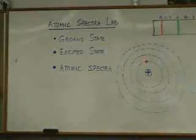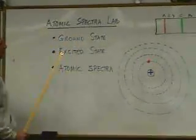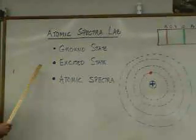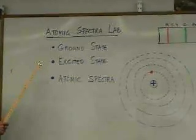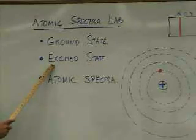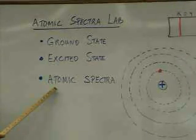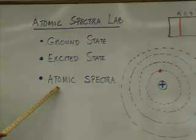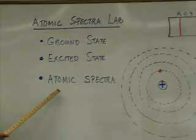Okay, one of the labs you're going to be doing is called the Atomic Spectra Lab, and really to understand that, you need to understand these three level two objectives: what the ground state is, what the excited state is, and what an atomic spectra is, and where the atomic spectra comes from, or how does one get created.